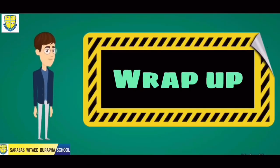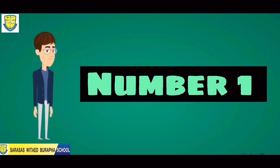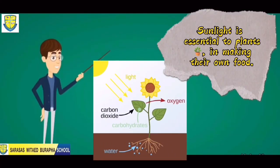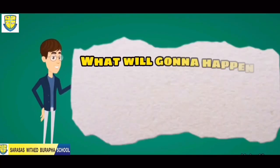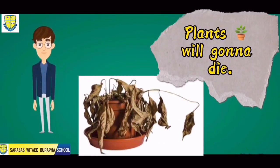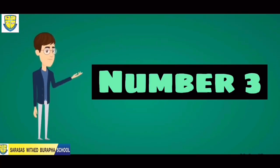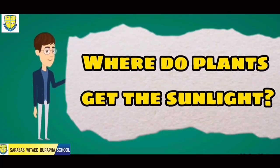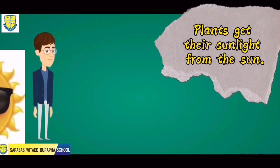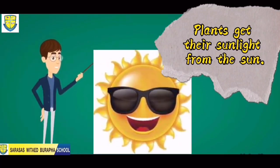Let's wrap up our topic for today. Question number one: Why is sunlight important to plants? Sunlight is essential to plants because they use sunlight in making their own food. Question number two: What will happen if plants don't have sunlight? The plants will die if they don't have sunlight. Question number three: Where do plants get sunlight? Plants get their sunlight from the sun, because the sun produces heat and light.